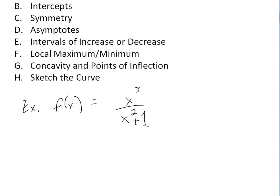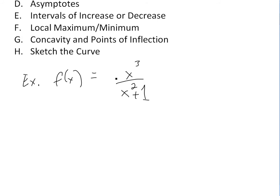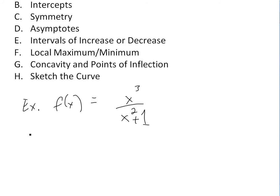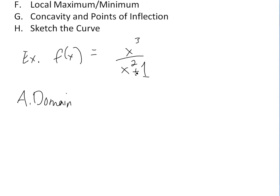The example we look at is f(x) = x³ divided by x² + 1. For part A, the domain: the denominator x² + 1 is never zero because it's always positive, so this is defined everywhere. It's a polynomial divided by a polynomial, so f(x) is defined for every x value — the domain is all real numbers.